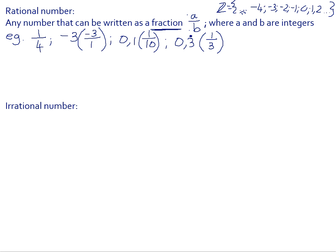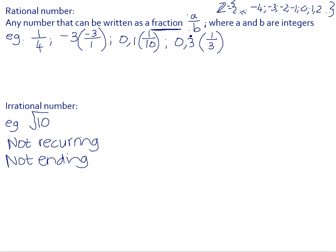An irrational number is the opposite of that — it's any number that you can't write as a fraction. For example, the square root of a non-perfect square like 10. If you find the square root of 10, you get a decimal as your answer that is not recurring — in other words, there's no pattern. The same numbers don't repeat themselves over and over again in a pattern; it's a non-ending decimal that carries on to infinity. Another example is pi, which has infinitely many decimal places and there's no recurring pattern to them, so you cannot write it as a fraction.